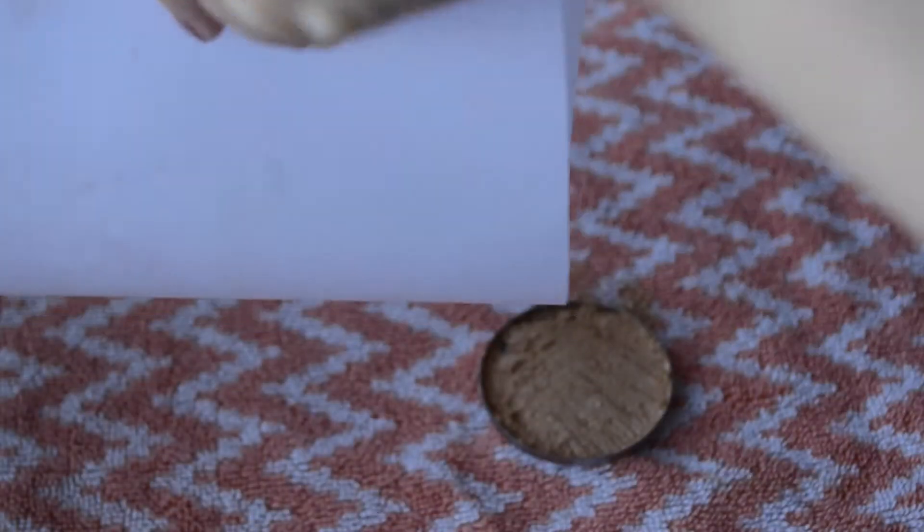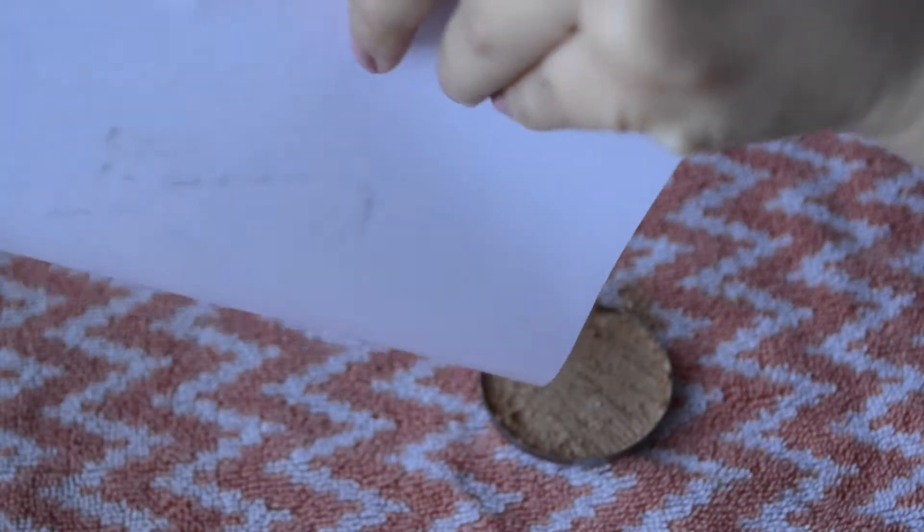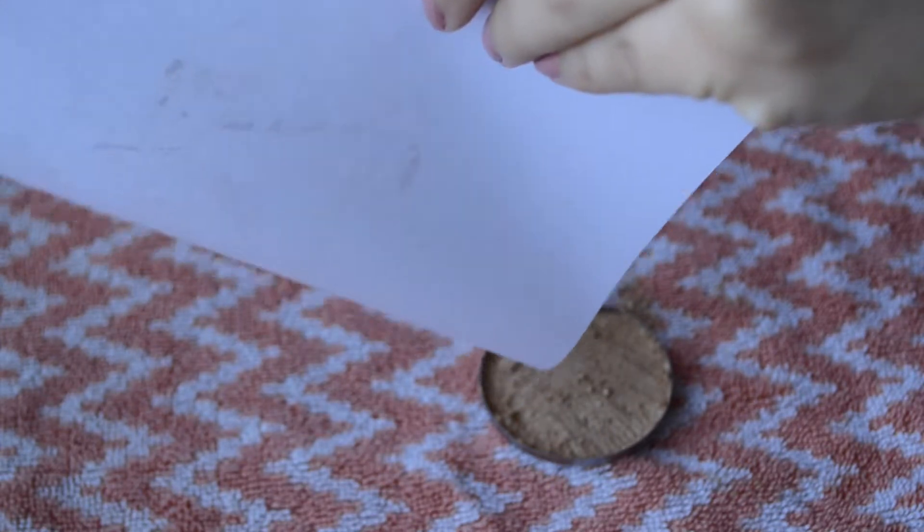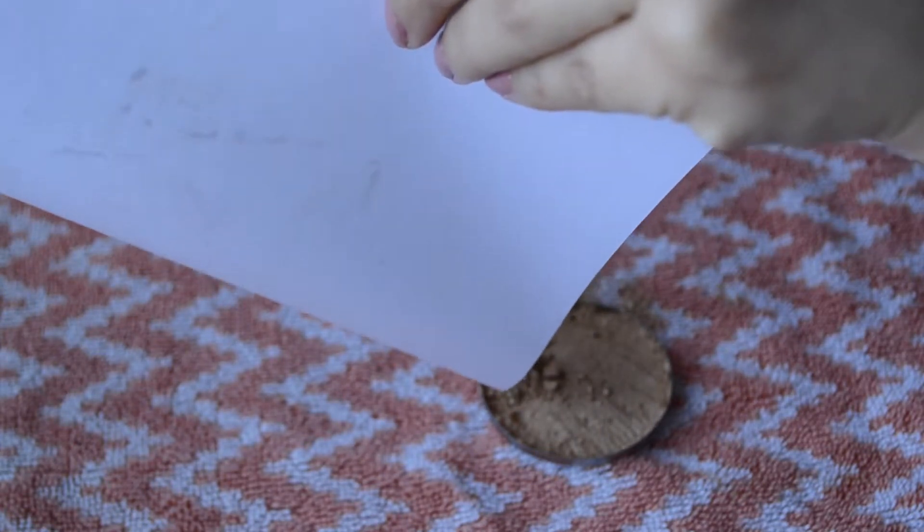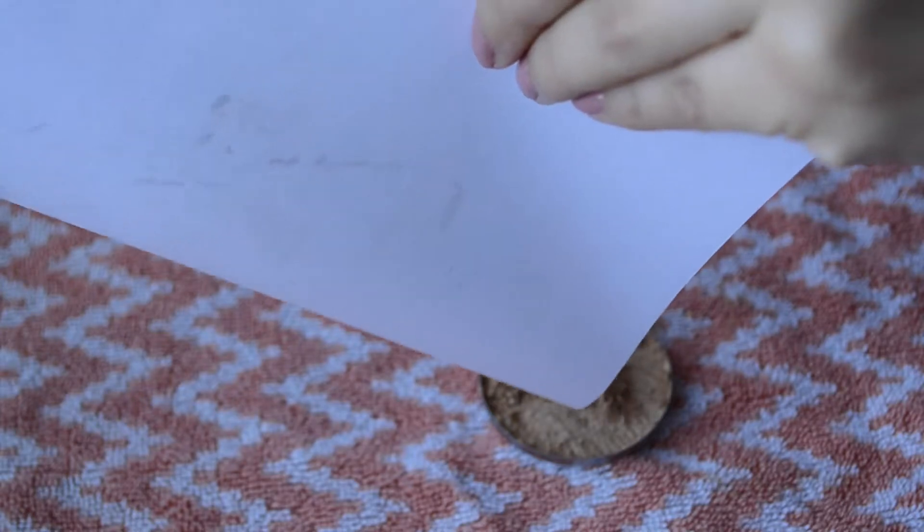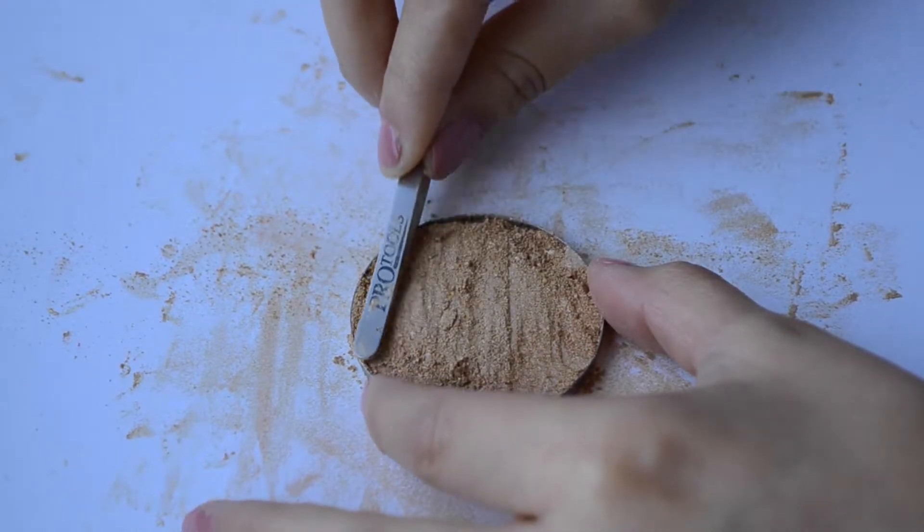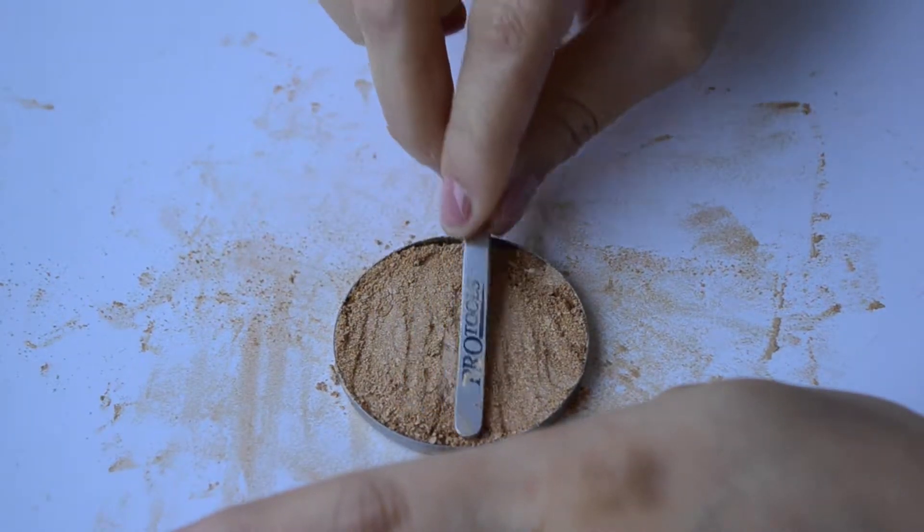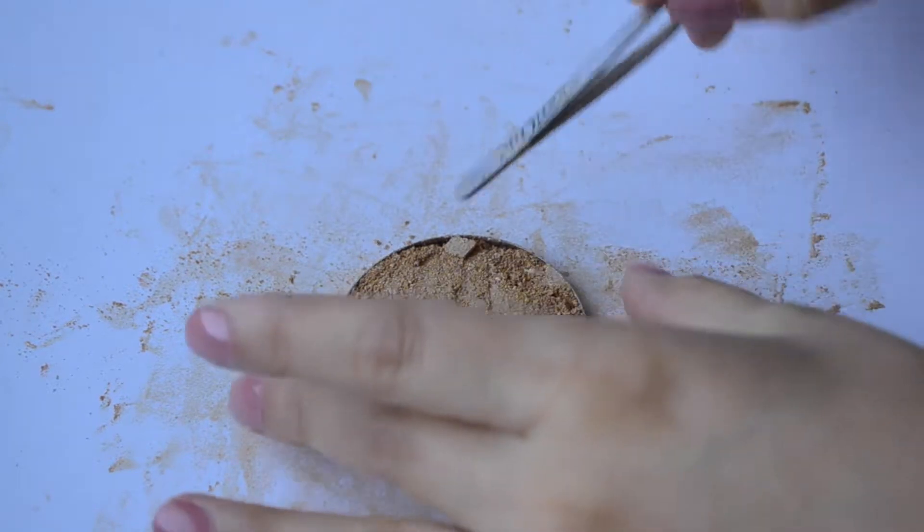As you can see here, I'm just repeating the same step. I'm dumping a little bit more and then I'm going to flatten that section out. I will continue doing this until I have used up all the product and gotten to the very top of the pan.